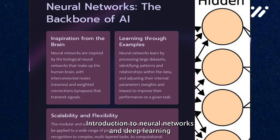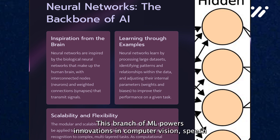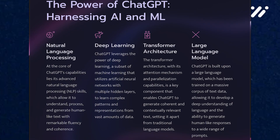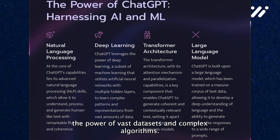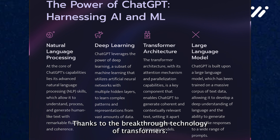Introduction to Neural Networks and Deep Learning. Neural networks, inspired by the human brain, form the backbone of deep learning. This branch of ML powers innovations in computer vision, speech recognition, and beyond, paving the way for advancements like ChatGPT. ChatGPT, a marvel of modern AI, harnesses the power of vast data sets and complex algorithms. It understands and generates text that's astonishingly human-like, thanks to the breakthrough technology of Transformers.